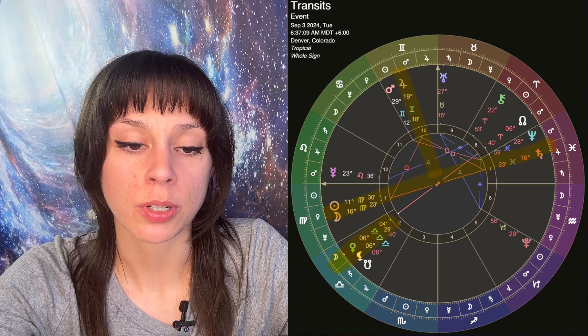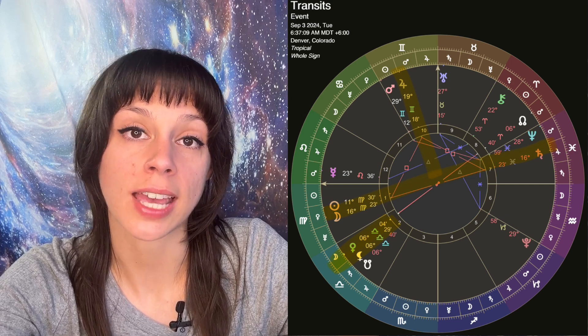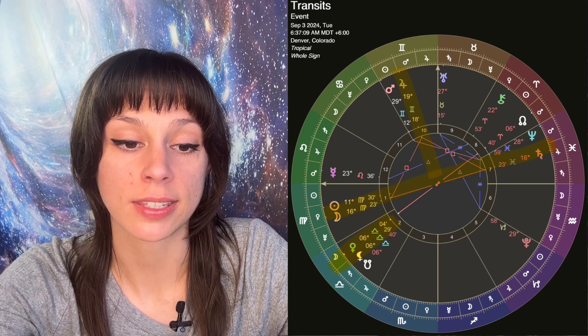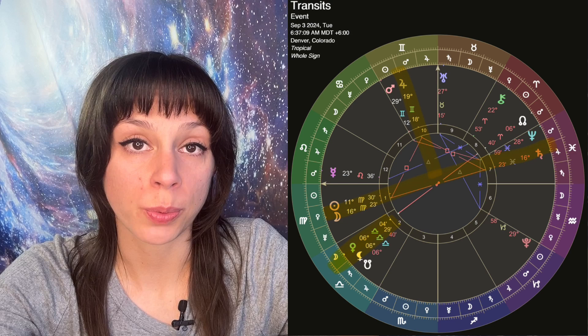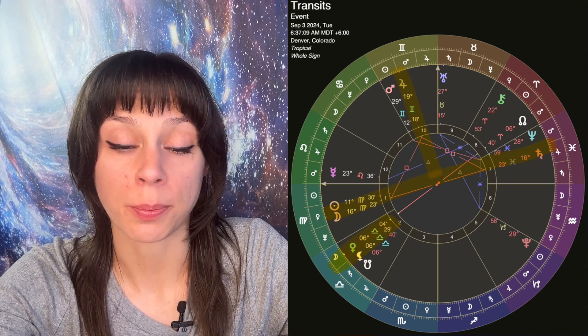In addition, Tuesday, September 3rd, the Virgo moon will oppose Saturn at 16 degrees of Pisces, and it will also square Jupiter at 19 of Gemini.